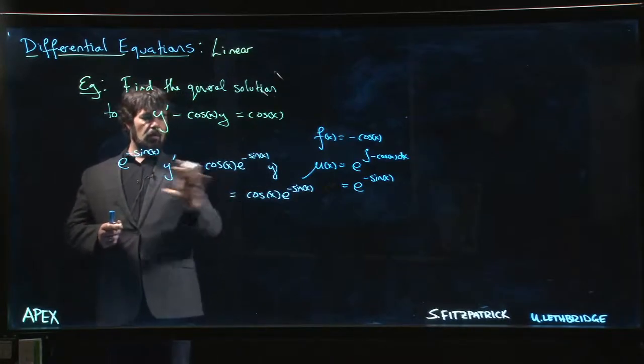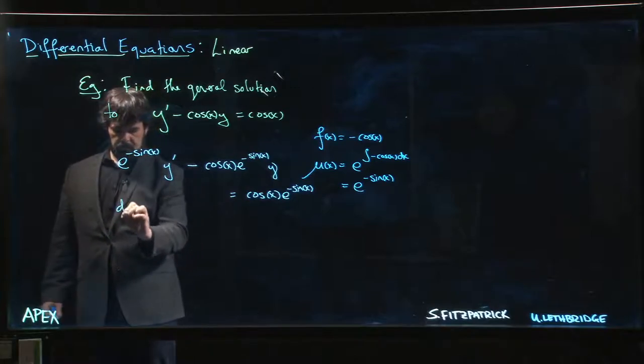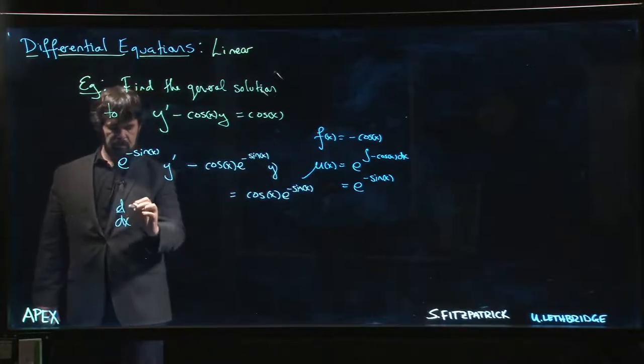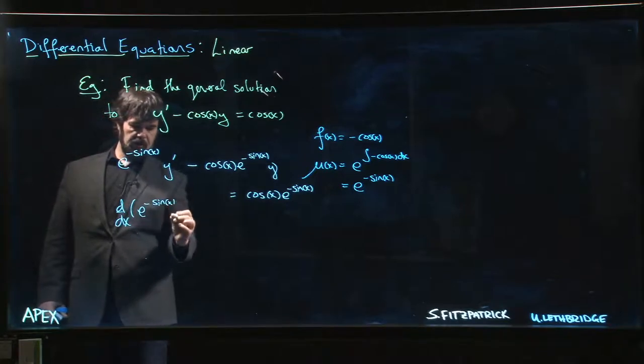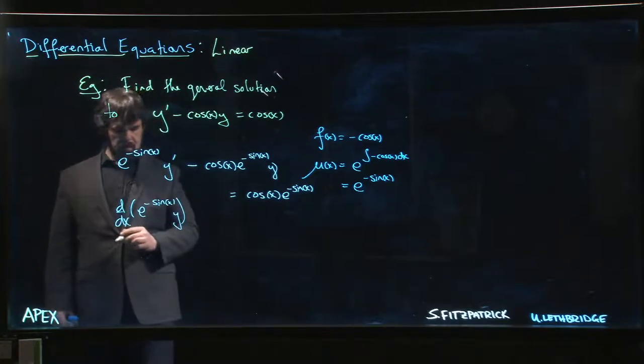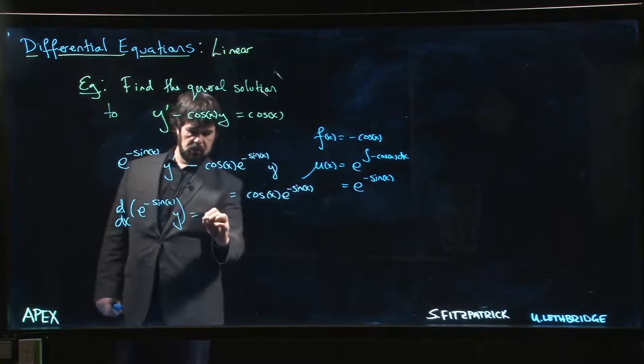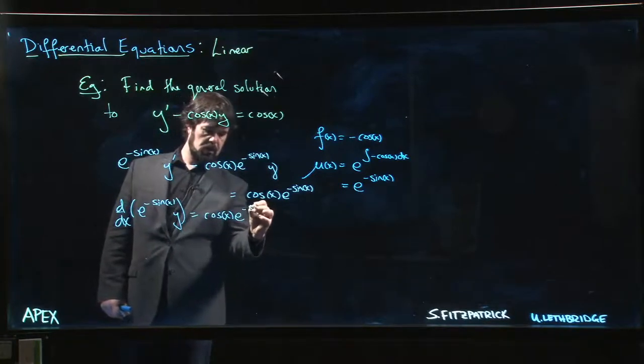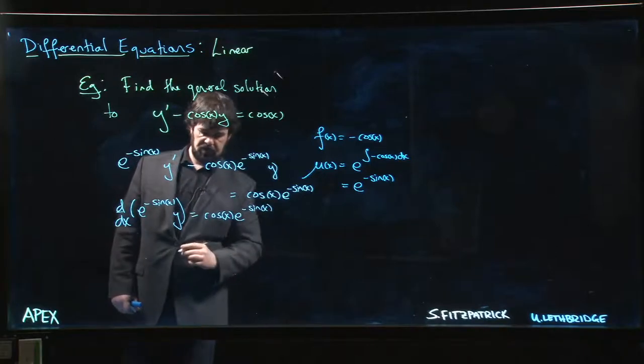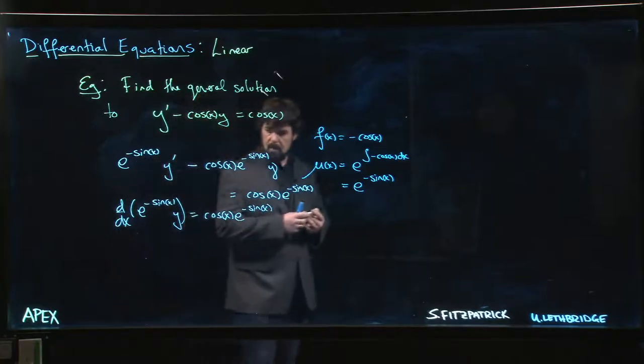As usual, the whole point is that the left-hand side now collapses. This is by design, e to the minus sine x times y. The derivative of that will be equal to cos x e to the minus sine x.